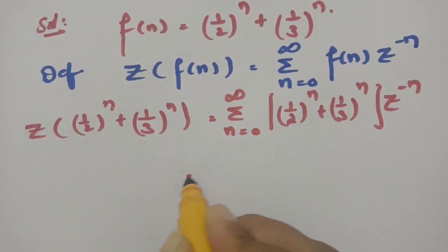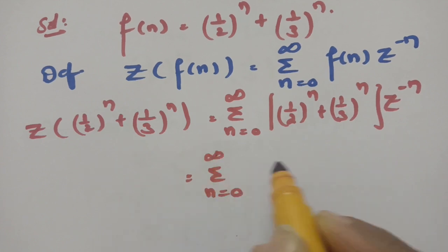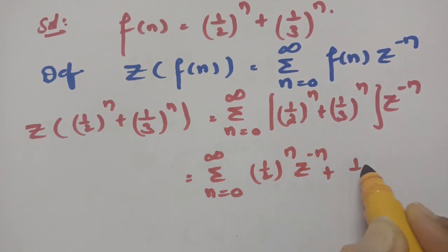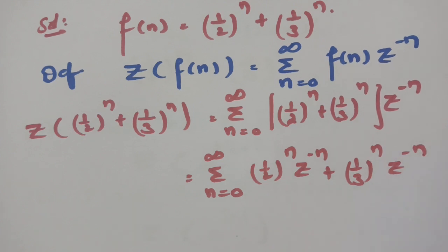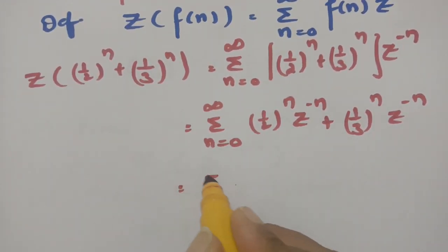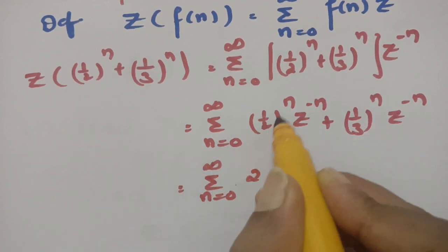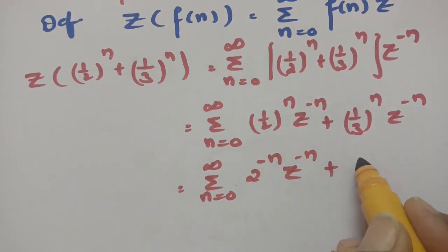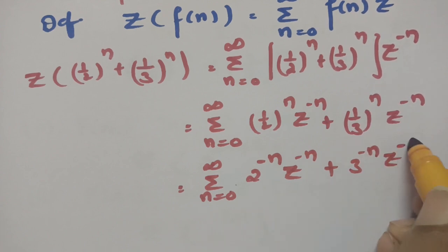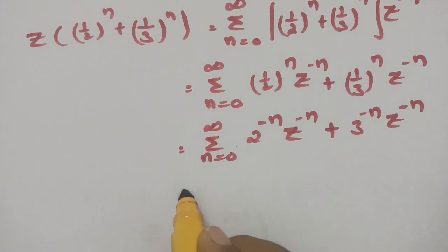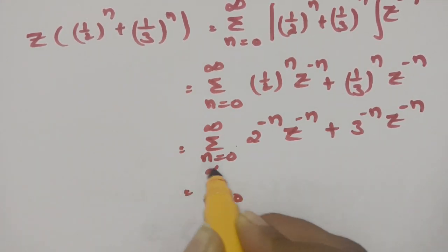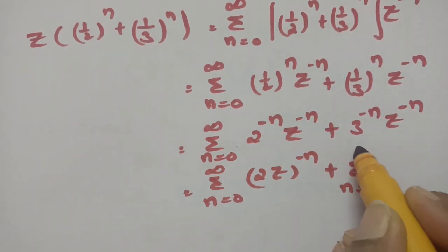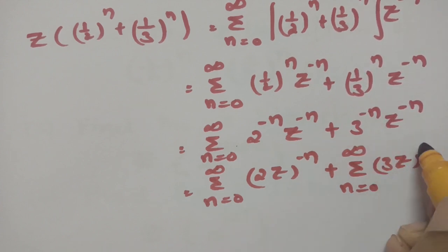Now I calculate that sum. Multiplying each term out: (1/2)^n · z^(−n) + (1/3)^n · z^(−n). This can be written as σ (n=0 to ∞) (2^(−n) · z^(−n)) + σ (n=0 to ∞) (3^(−n) · z^(−n)), which becomes σ (n=0 to ∞) (2z)^(−n) + σ (n=0 to ∞) (3z)^(−n).